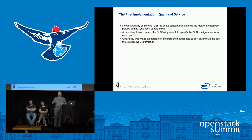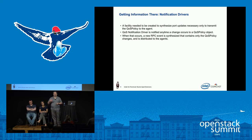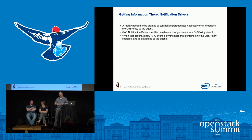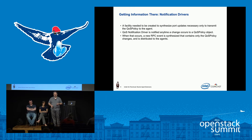A new QoS policy object to specify the configuration of quality of service was added to the port as an attribute. Any updates to the port data going over RPC would include the relevant QoS policy information. But if you just update the QoS policy itself, we needed a method to synthesize a port update in that case. So a QoS notification driver, part of the QoS plugin in neutron server, was created to ensure those events would be properly synthesized and sent down the wire.